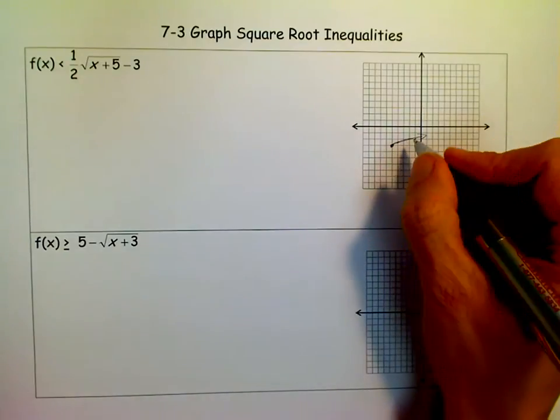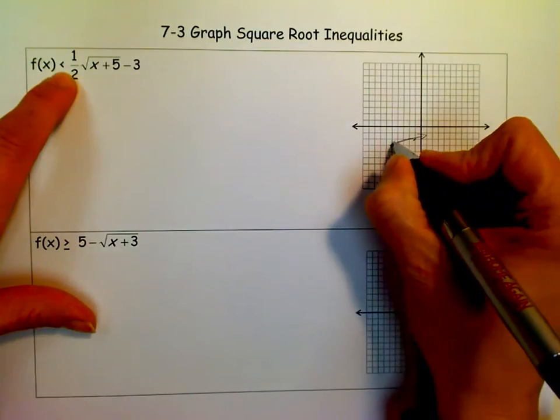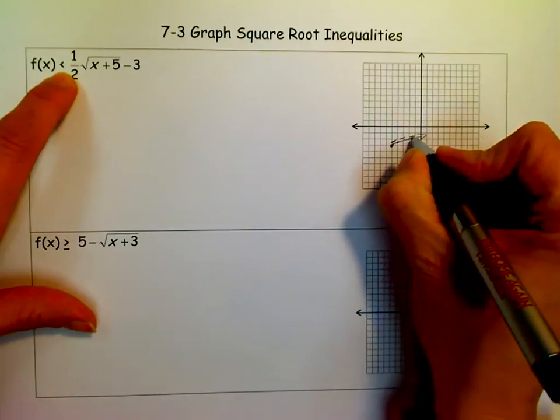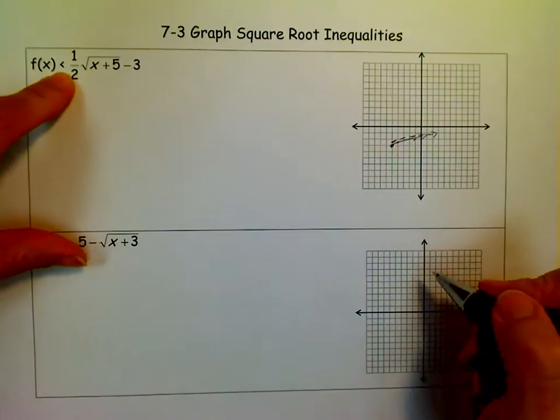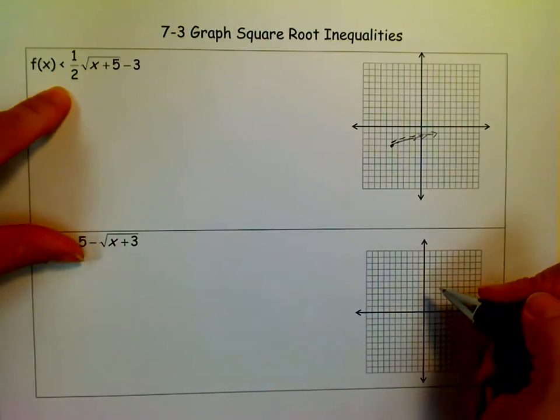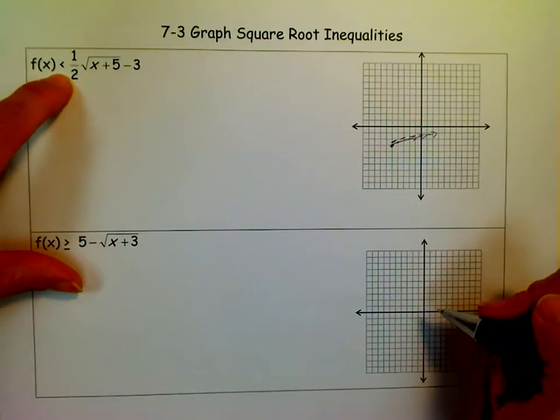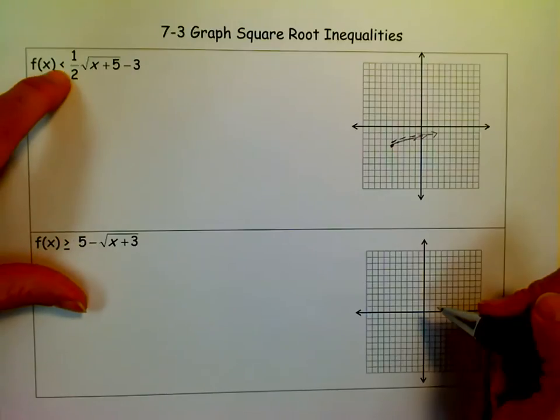Oops, my apologies. I'm not paying attention. It's a less than, so that means it would have been dashed. You should have dashed that curve. And then what we want to do is figure out where to shade.